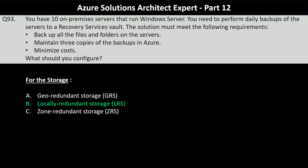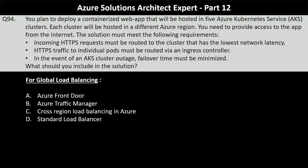Question number 94. You plan to deploy a containerized web app hosted in five Azure Kubernetes Service clusters, each in a different Azure region. You need to provide access to the app from the internet. The solution must route incoming HTTPS requests to the cluster with the lowest network latency, route HTTPS traffic to individual ports via an ingress controller, and minimize failover time in the event of an AKS cluster outage.